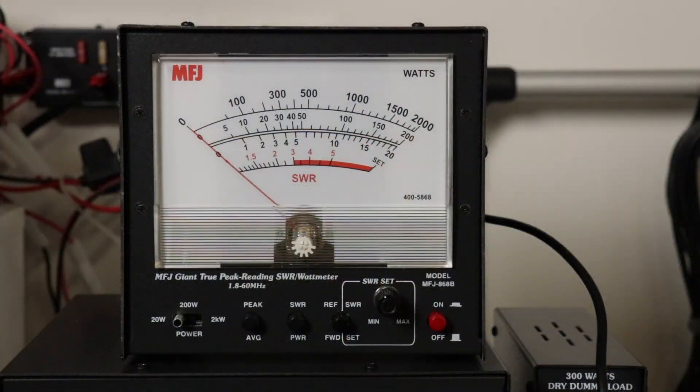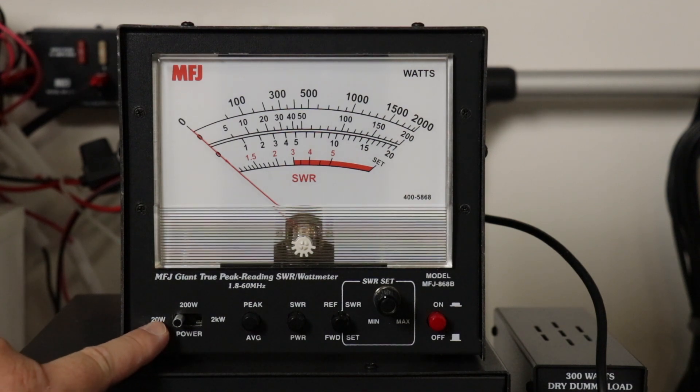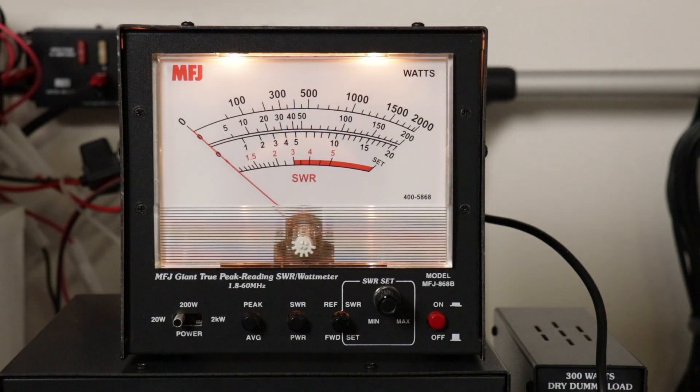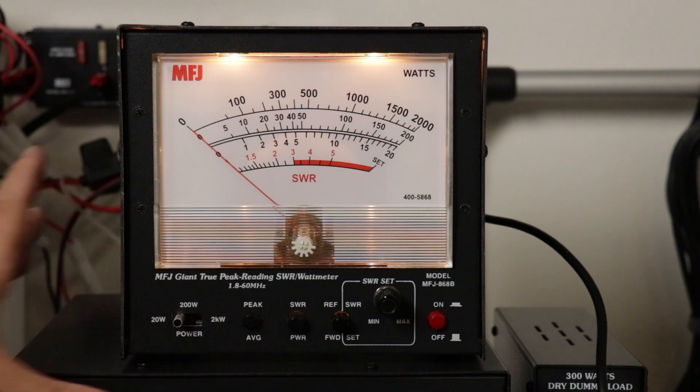I'm going to be using the IC7300 set to 10 watts. Have the 868B set to 20 watts. Power it on, and I'm using FM mode so that I have a constant carrier. Set it for average, and there we are at 10 watts.